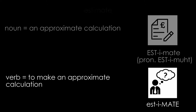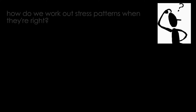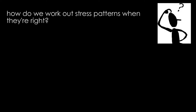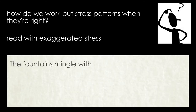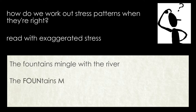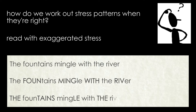So, if it's much easier to identify stress when it's wrong, how do we identify it when it's right? The easiest way is to read a line of poetry with exaggerated stress. You'll find that it's actually very difficult to put the stress in the wrong places. Take the first line of Shelley's poem Love's Philosophy: 'The fountains mingle with the river.' It's much easier to say 'The FOUN-tains MIN-gle WITH the RI-ver' than it is to say it with wrong stress.